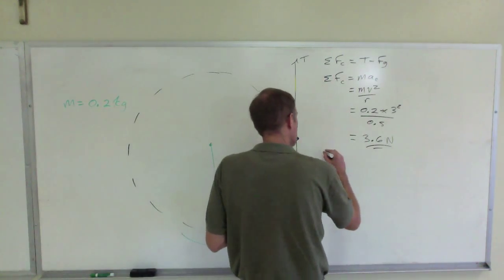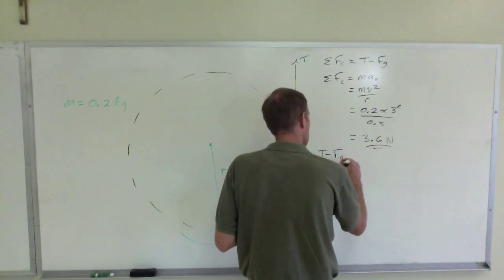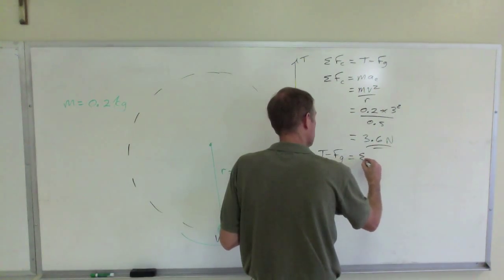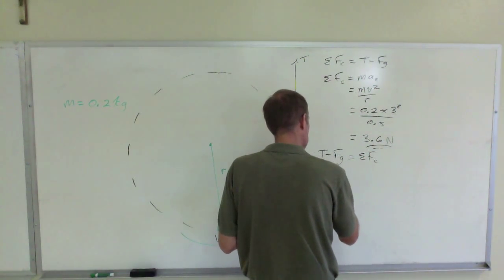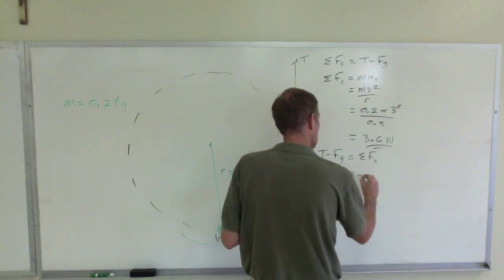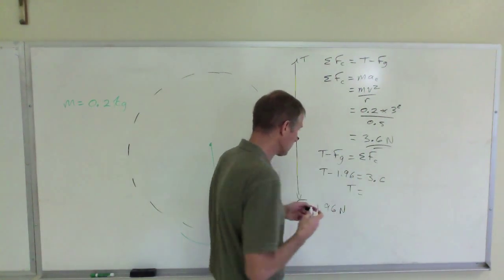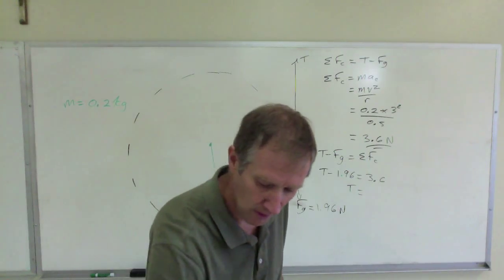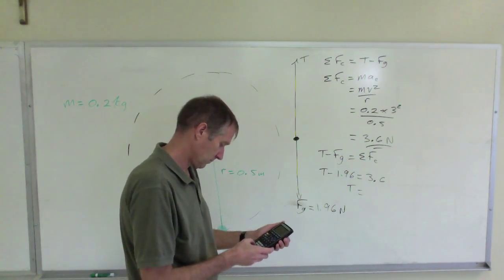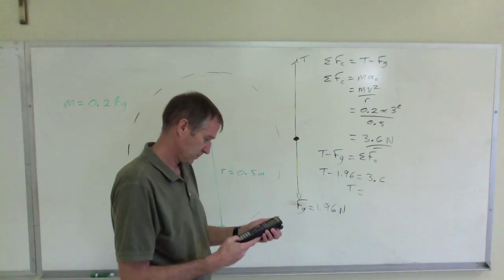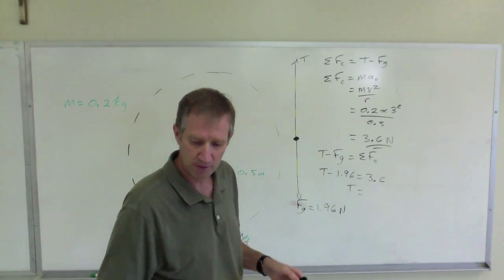So tension minus weight is equal to that centripetal force. So T minus 1.96 equals 3.6. And therefore, T equals, well, 1.96 plus 3.6 is 5.56 newtons.